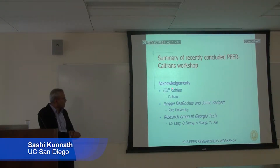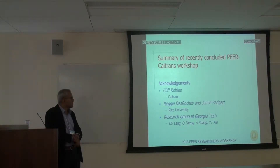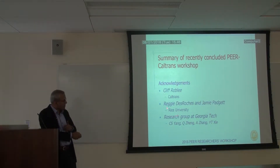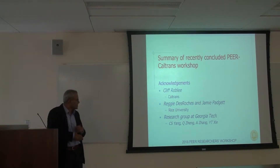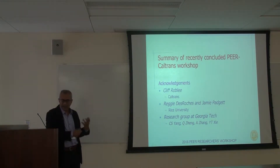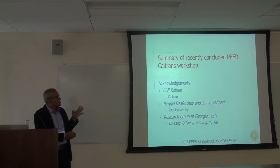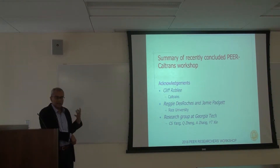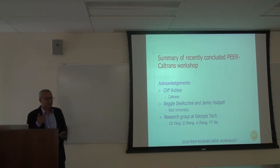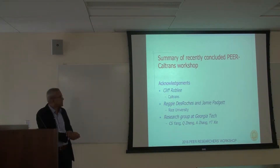I want to start by acknowledging Cliff Robley, who spearheaded this whole project and wanted some kind of an expert opinion on something that Caltrans was funding. The Caltrans-funded project was actually at Georgia Tech. Reggie was initially at Georgia Tech and has since moved to Rice, so I've enlisted him here at Rice University. It's really a large group of people at Georgia Tech who looked at a fairly extensive database of bridge column experiments and tried to come up with some data. Cliff, who managed this project, wanted expert opinion on some capacity models for these bridge components.